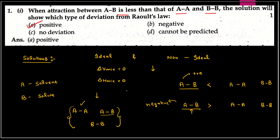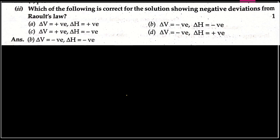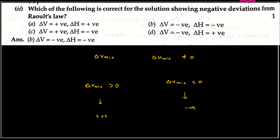Question number two: negative deviation from Raoult's law. Negative deviation ke liye, delta V mix aur delta H mix ki baat karein to non-ideal solution ke liye ye non-zero hote hain. Agar delta V mix positive aa raha hai then it will show positive deviation, aur agar delta V mix negative aa raha hai then it will show negative deviation. Delta H bhi negative hona chahiye negative deviation ke liye.